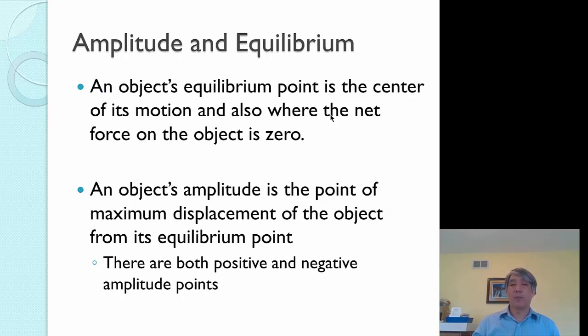Two more terms that we'll use are amplitude and equilibrium. An object's equilibrium point is the center of its motion. So if I'm going right to middle, left to middle, equilibrium is going to be the middle. Amplitude is how far the maximum displacement that I go from the middle or from that equilibrium point. I'm going to have a positive amplitude and a negative amplitude.